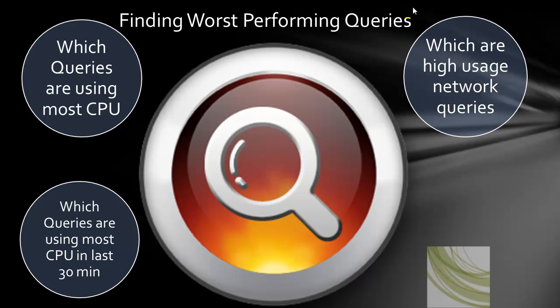In the third scenario, we'll look into which are the high usage network queries available — which queries usually block your network. So if you are seeing a lot of network IOs as a wait type, then this is the type of query which is going to help you.